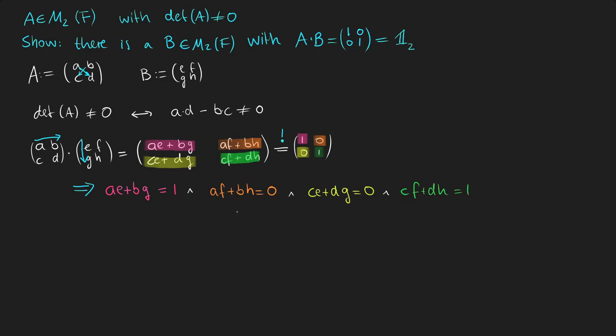And the easiest way to deduce some information from those 4 equations is to use this one and this one, because they are equal to 0. Therefore we know that the left part has to be the negative of the right part. And remember, we want the values of B to be dependent on the values of A, and therefore we have to guess what A, B, C, and D are.